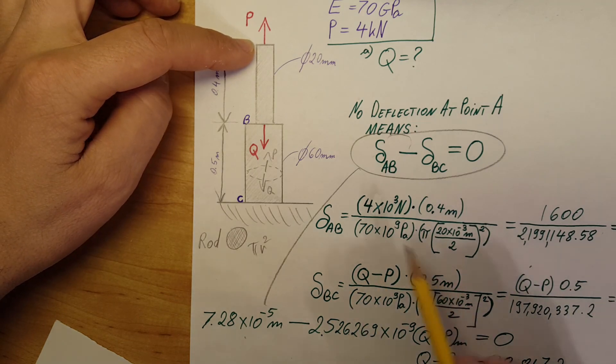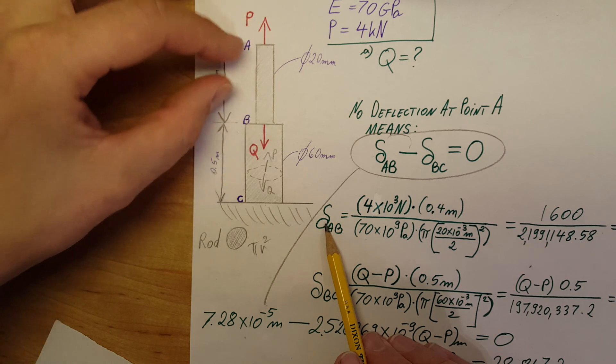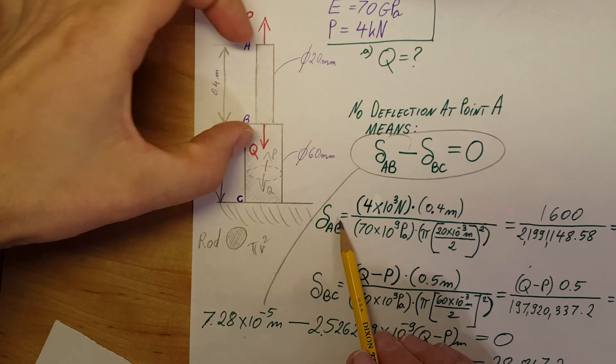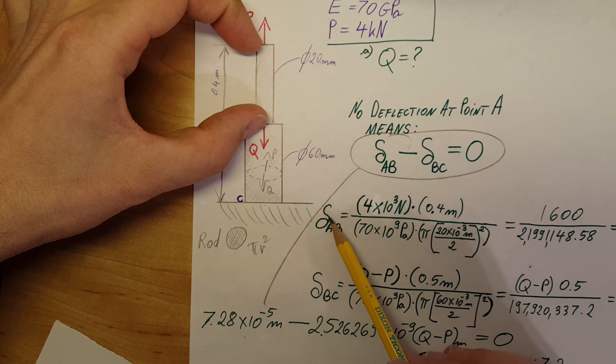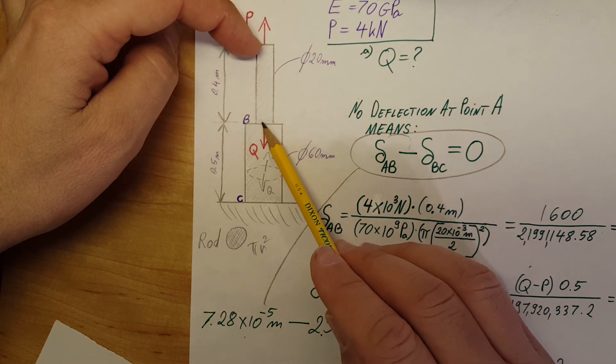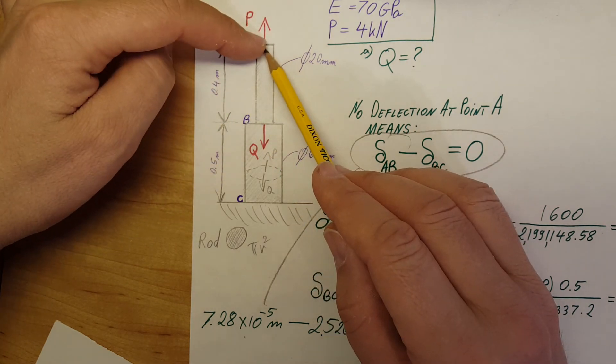We need to find that. Actually, we already calculated that. By knowing the deformation of part AB, which is this one, we know that whatever deformation happened, it had to happen at part B. Point A stayed where it is.